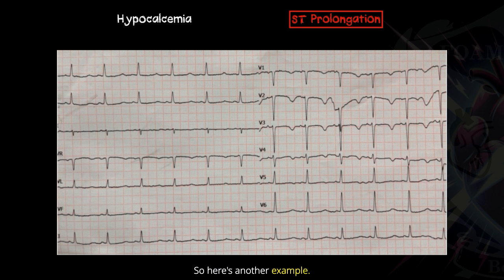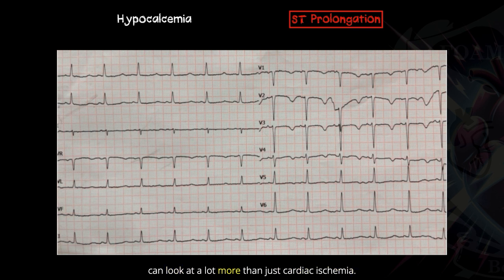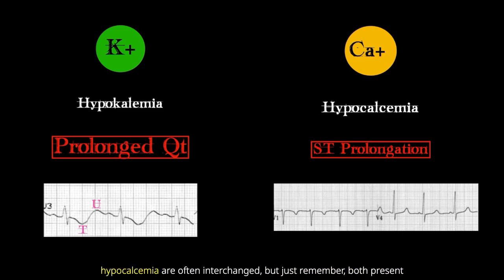Here's another example. In hypocalcemia, you can see this prolonged ST segment and then a normal-sized T wave — prolonged ST segment and a normal-sized T wave. This is one of the cool things about the 12-lead: we can look at a lot more than just cardiac ischemia. We can see exactly which electrolyte is being affected, whether it's high or low.